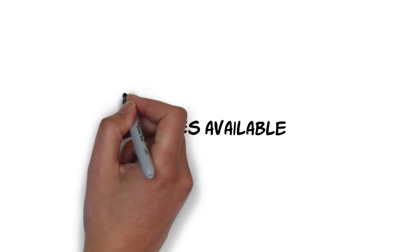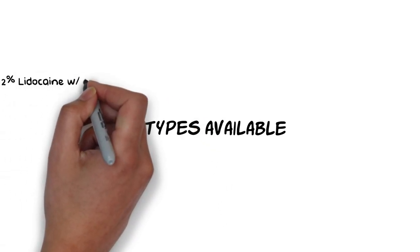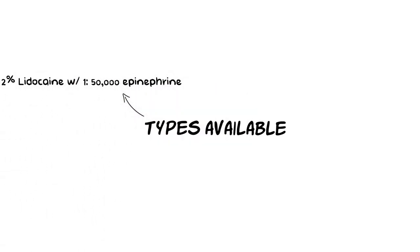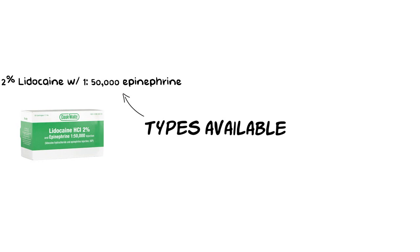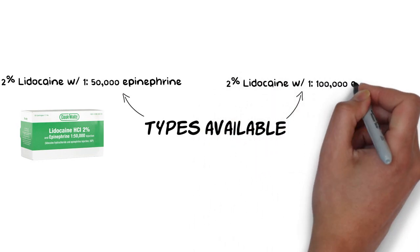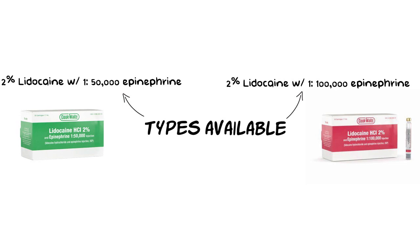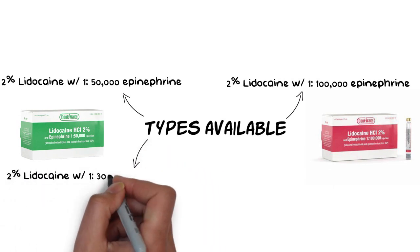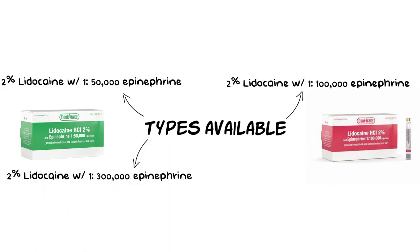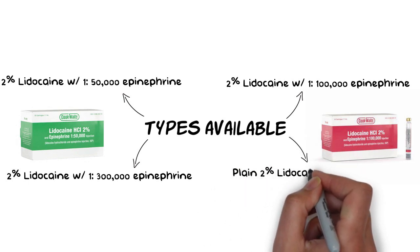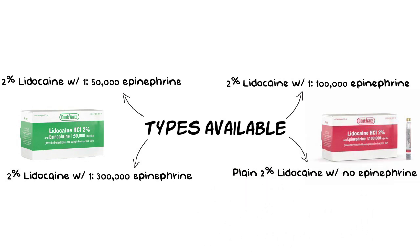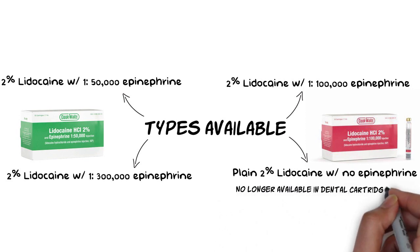There are two types of Lidocaine formulations available in the North American market: 2% Lidocaine with 1 part per 50,000 parts of epinephrine, and 2% Lidocaine with 1 part per 100,000 parts of epinephrine. A version of 2% Lidocaine with 1 per 300,000 parts of epinephrine is also available in some countries. Plain 2% Lidocaine with no epinephrine is no longer available in dental cartridges supplied in North America.